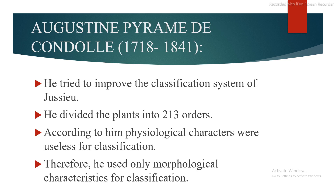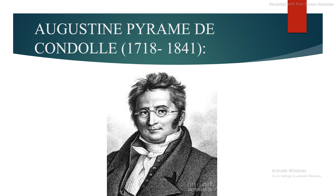Next is Augustin Pyramus de Candolle, the time period was 1778–1841. He tried to improve the classification system of de Jussieu. They divided the plants into 213 orders. According to him, physiological characters were useless for classification, therefore they only used morphological characters for their classification system.